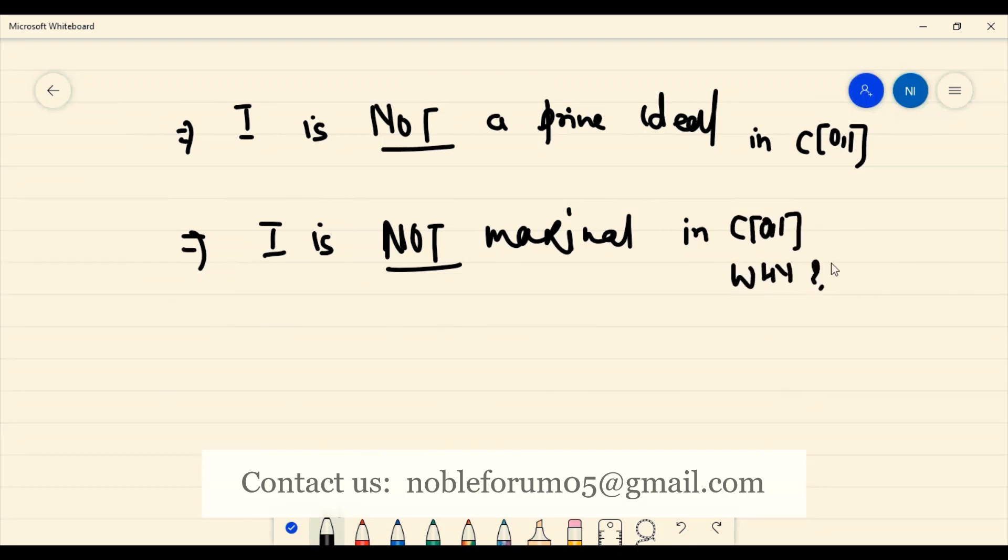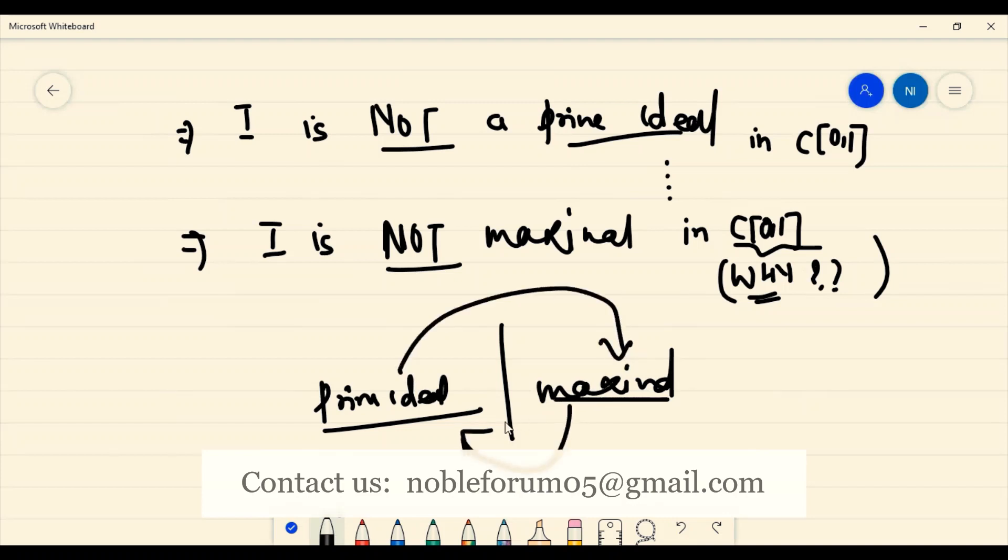This is not a prime ideal in C[0,1], which implies I is not a maximal ideal in C[0,1]. I think this is a good idea. If this is the gap, I want to find this gap. This question was asked to a few students, and all of them found this question challenging. The basic approach we have given you is how to tackle this question.